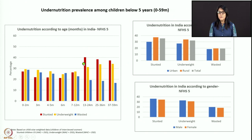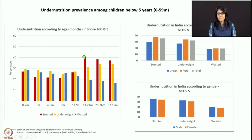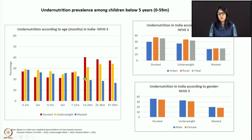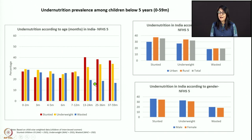As a baby becomes stunted, bones are small, so underweight also increases — a short child is always kind of underweight unless the child puts on a lot of fat. There is a significant increase in stunting and underweight. Importantly, as stunting increases, wasting decreases. In my opinion, as babies become shorter and shorter, wasting gets masked because a shorter baby does not need as much weight to avoid falling under the wasting threshold. This is a paradox — as stunting goes up, wasting comes down, but this is actually masking of wasting.